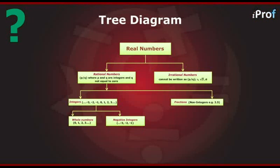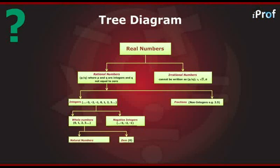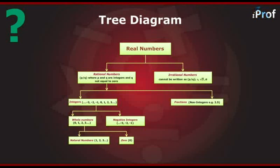Whole numbers are further divided into two categories: natural numbers and 0. Natural numbers include all whole numbers except 0 — for example, 1, 2, 3 and so on and so forth.